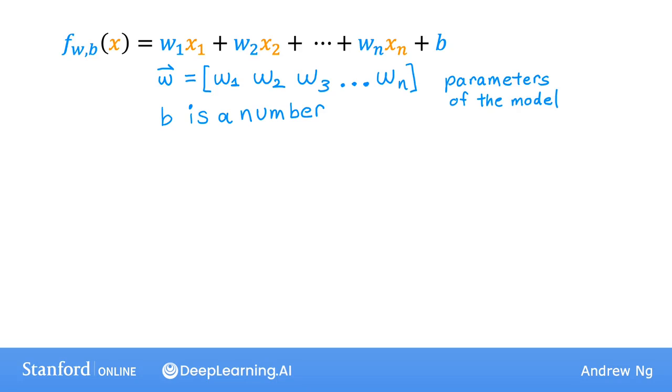Let me also write x as a list or a vector, a row vector, that lists all of the features x1, x2, x3 up through xn. This is again a vector, so I'm going to add a little arrow on top to signify. In the notation up on top, we can also add little arrows here and here to signify that w and x are actually these lists of numbers, these vectors.